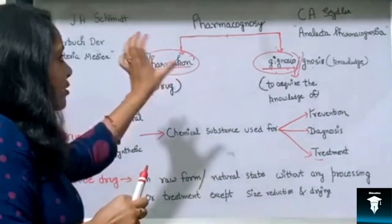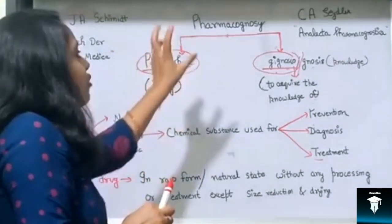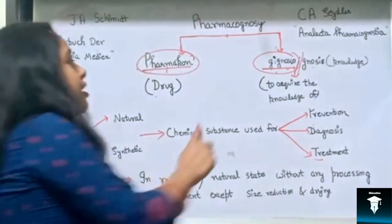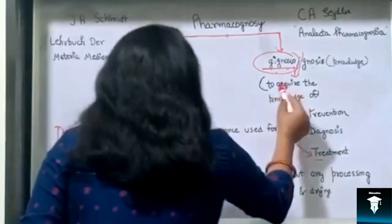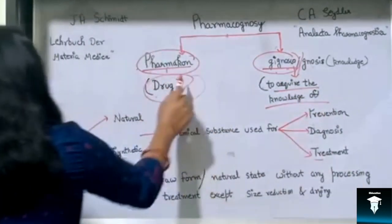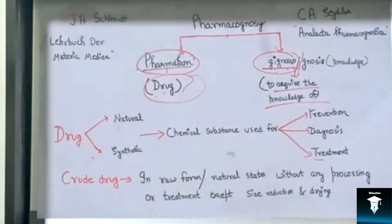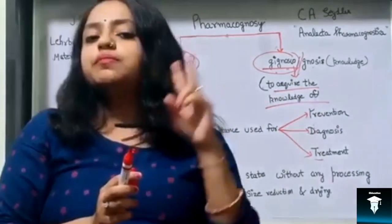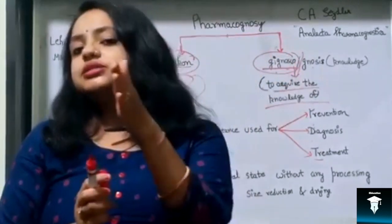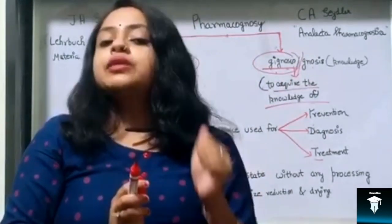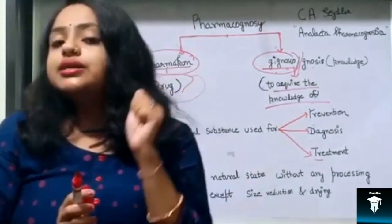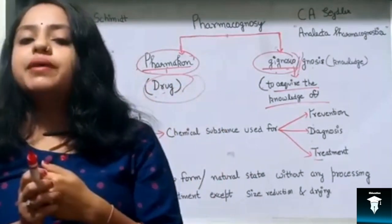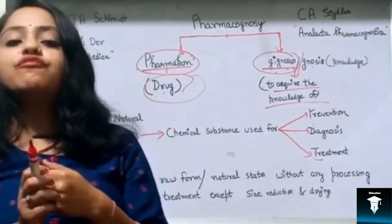So from the meaning of this term, it is clear that through this subject we will acquire the knowledge of drug. Actually, Pharmacognosy is related to both botany, plant chemistry, and phytochemistry, and it is a vital link between Ayurvedic and Allopathic systems of medicine.